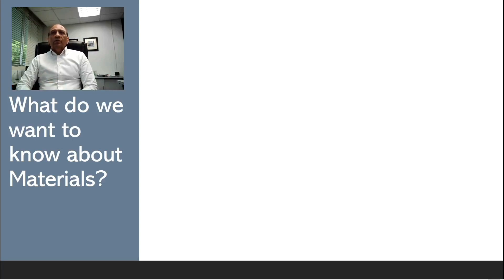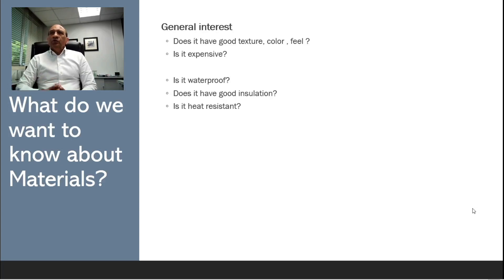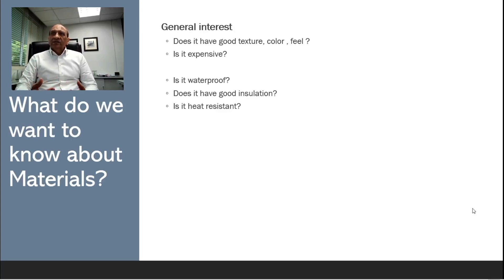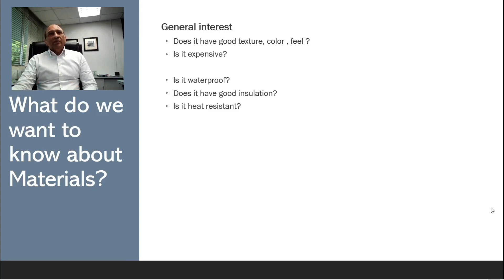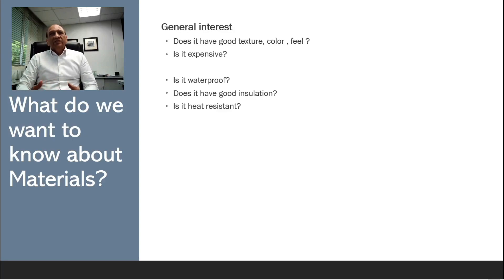What do we want to know about materials? First, we should look at what people would like to know about any material in general. General interest includes what a material is, whether it has a good texture, a good color, and what the feel is. Whenever we buy something we always think about the materials of that product, and we also consider whether it is expensive, waterproof, has good insulation, or is resistant.